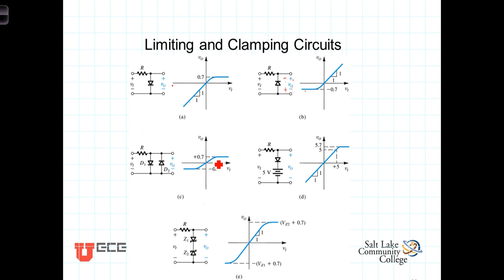In this circuit here, the output follows the input until the input gets large enough to cause this diode to conduct. But you'll notice the cathode of this diode is lifted up above ground 5 volts. So the input has to be 5 volts greater than this before the diode will start to conduct.